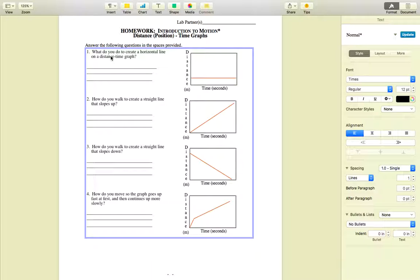The first is, what do you do to create a horizontal line on a distance-time graphic? So we have a distance-time, as you can see, the distance, the position. So if you think about this axis as having numbers, the number is fixed, right? And the time is changing, and that means you're not moving. So what do you do? You don't move.